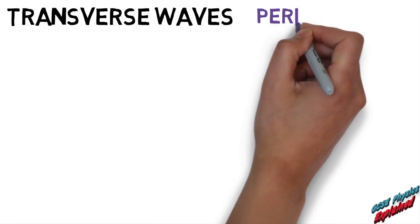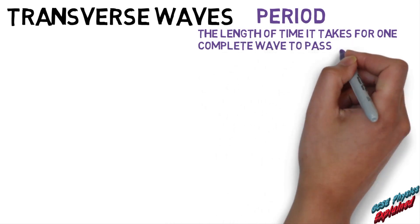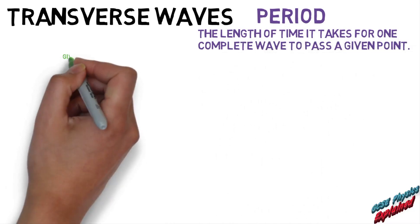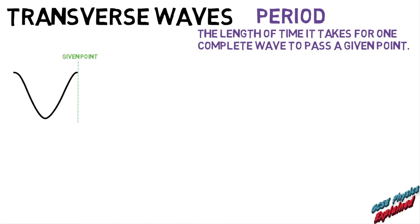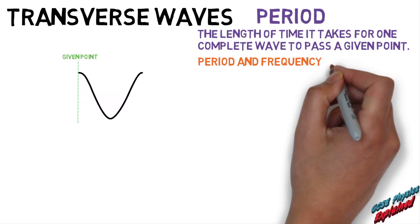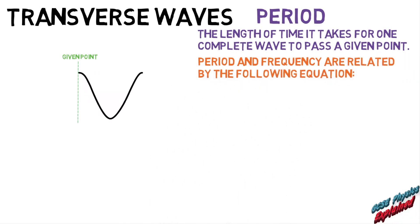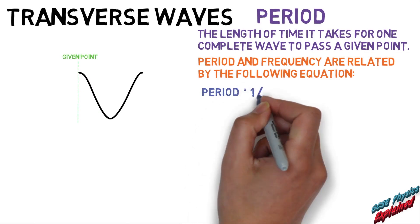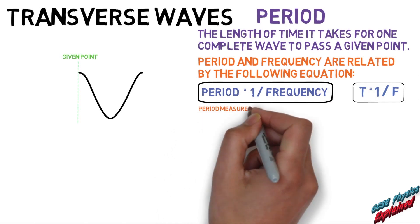Period is the length of time it takes for one complete wave to pass a given point. Period and frequency are related by the following equation: Period equals one divided by frequency. T equals one divided by f. Period is measured in seconds.